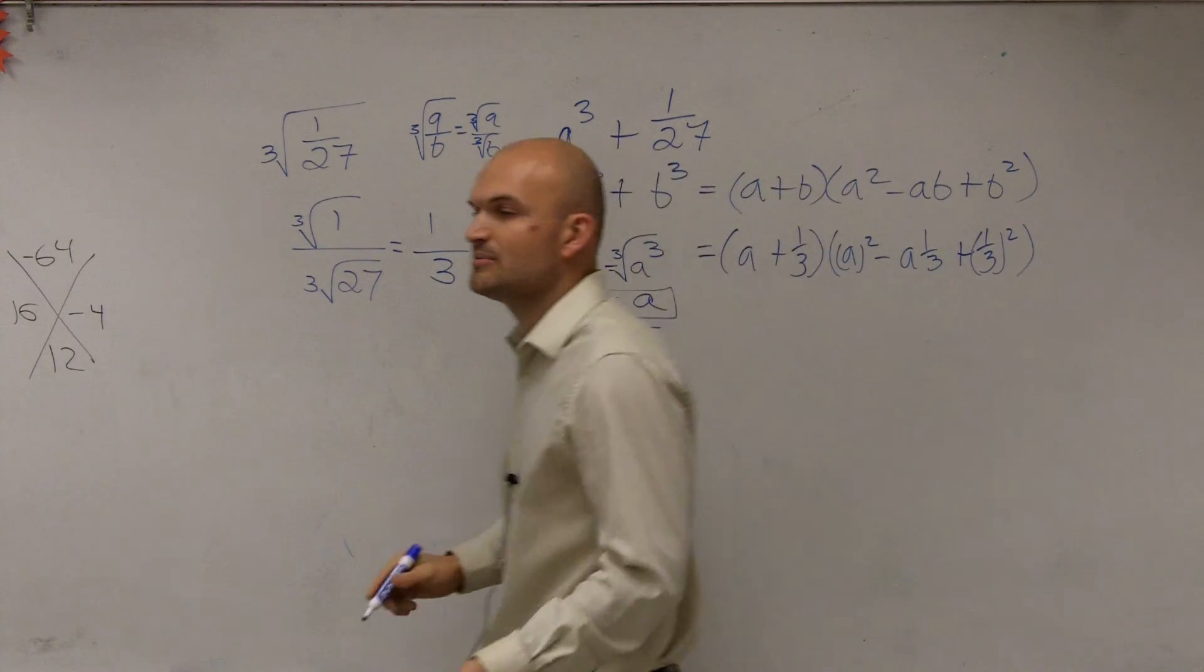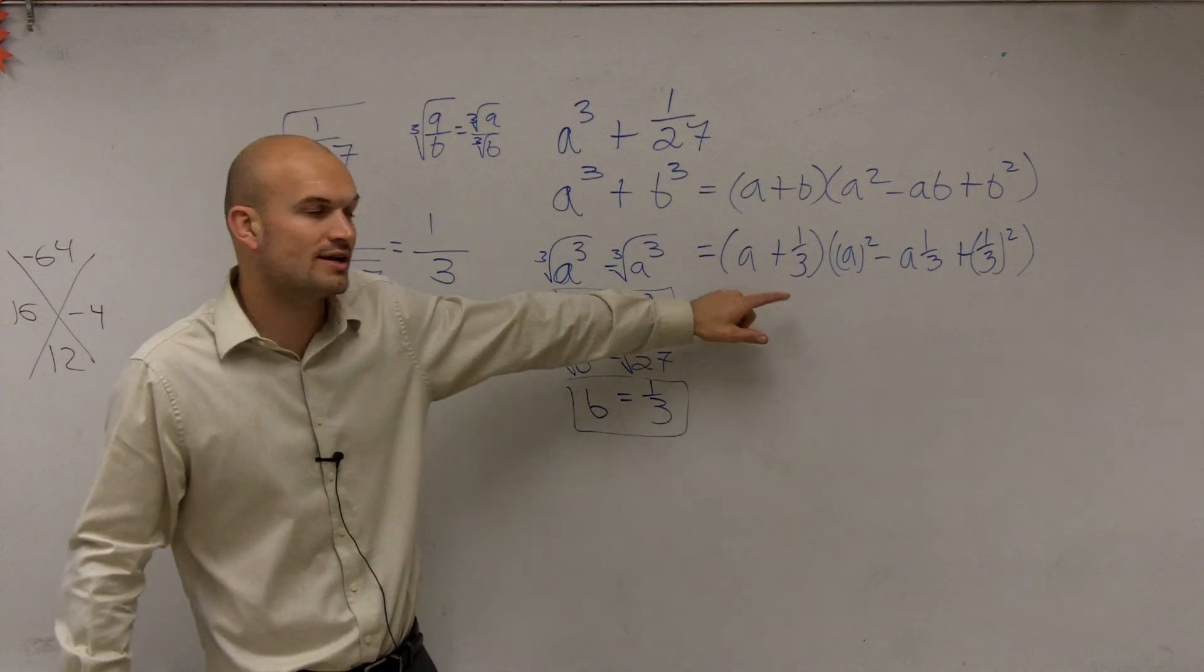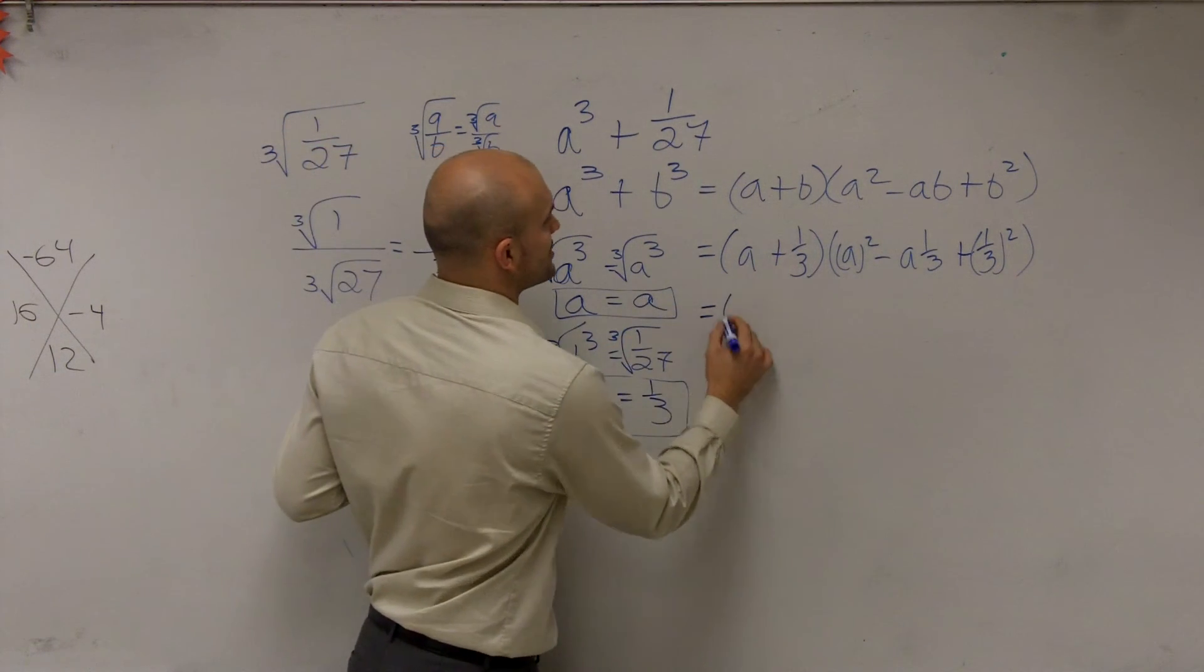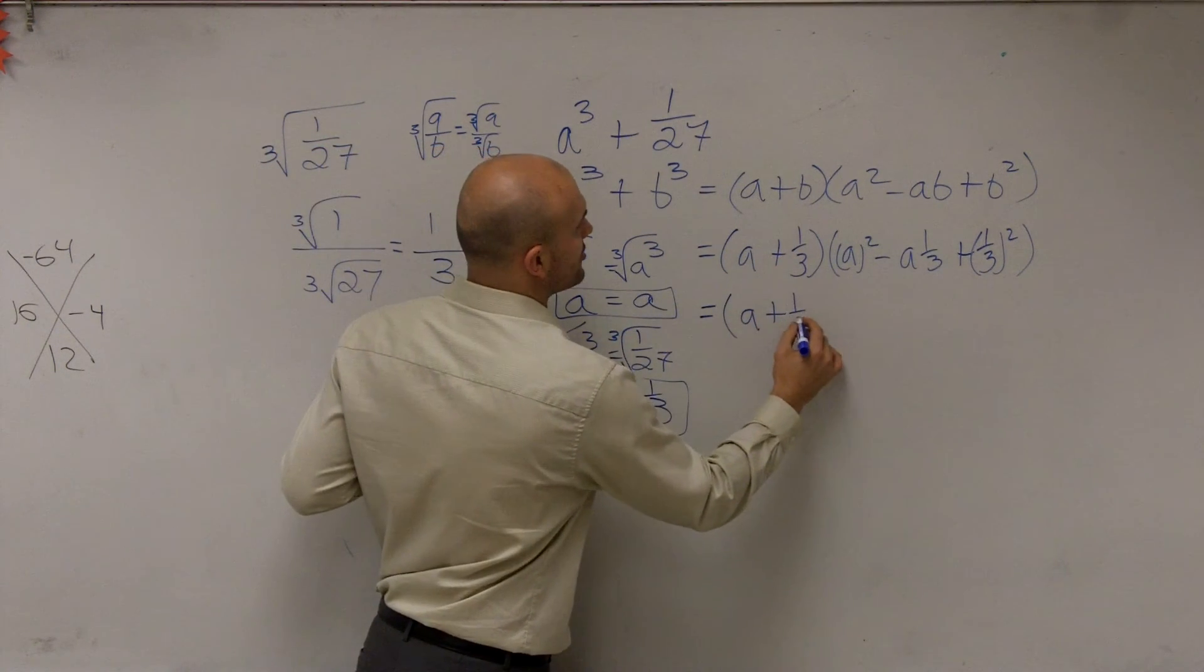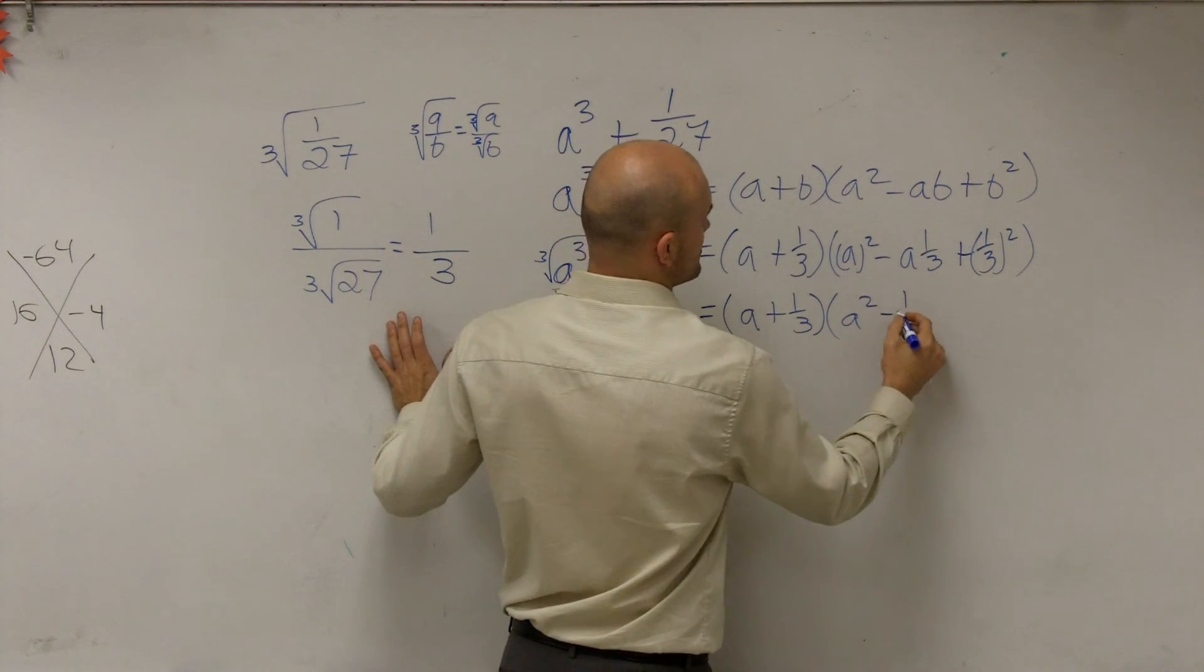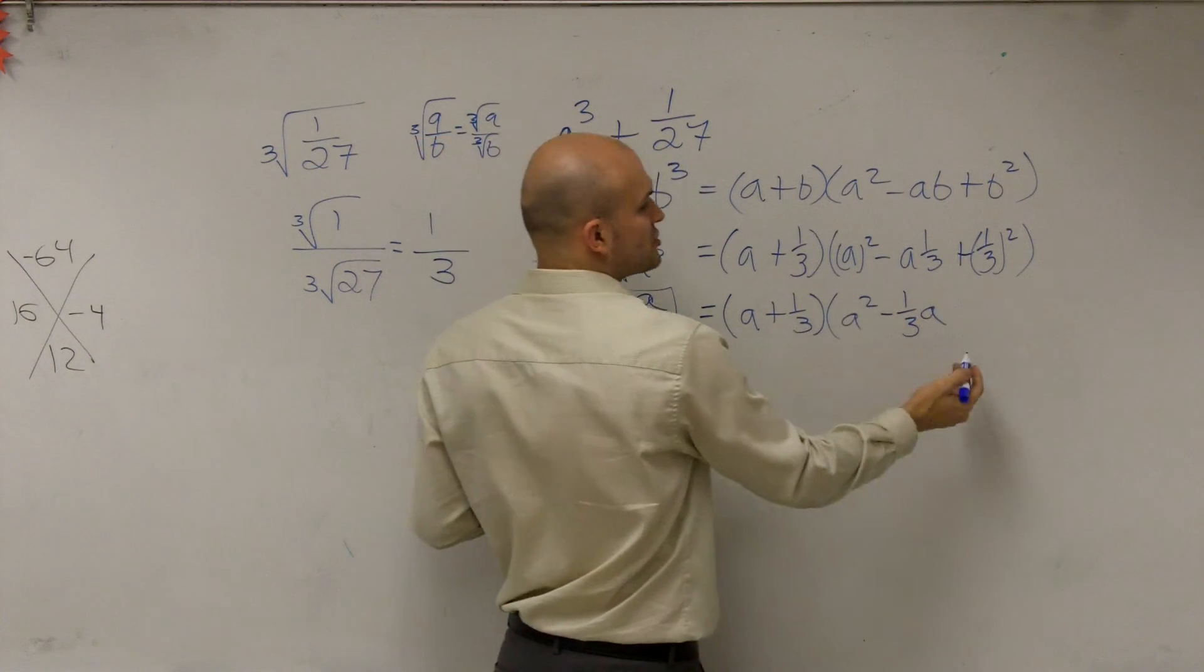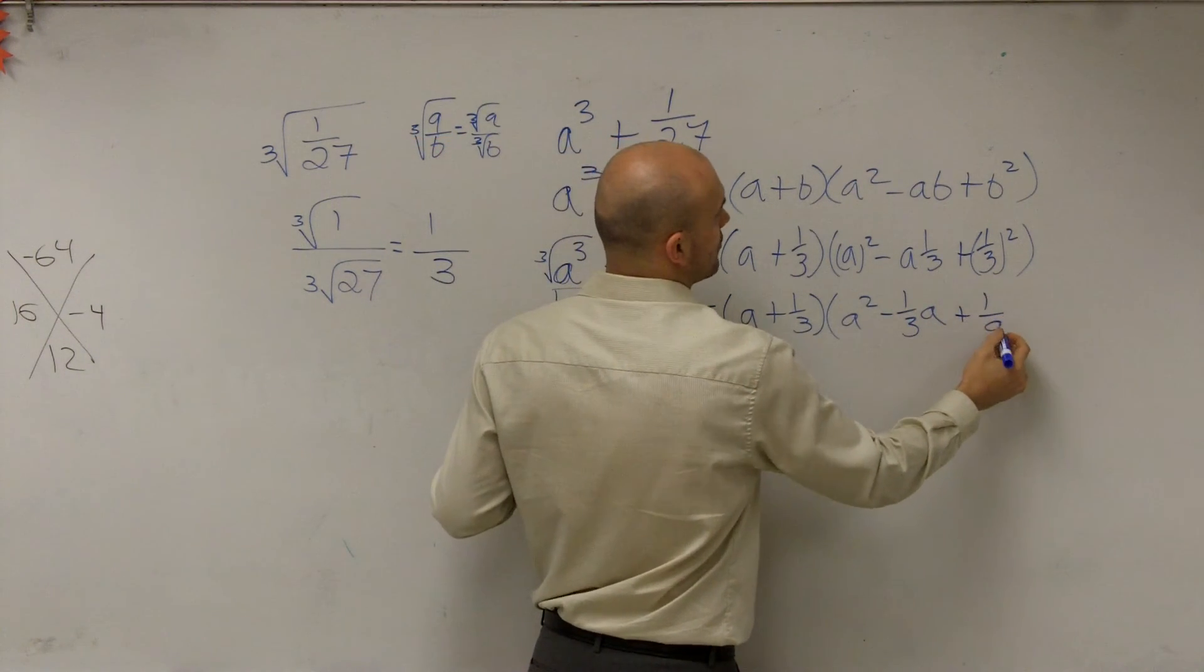It's very important that you put them in parentheses when you plug them in, because you have to make sure you square each term. My final answer is (a + 1/3) times (a² - 1/3 a + 1/9).